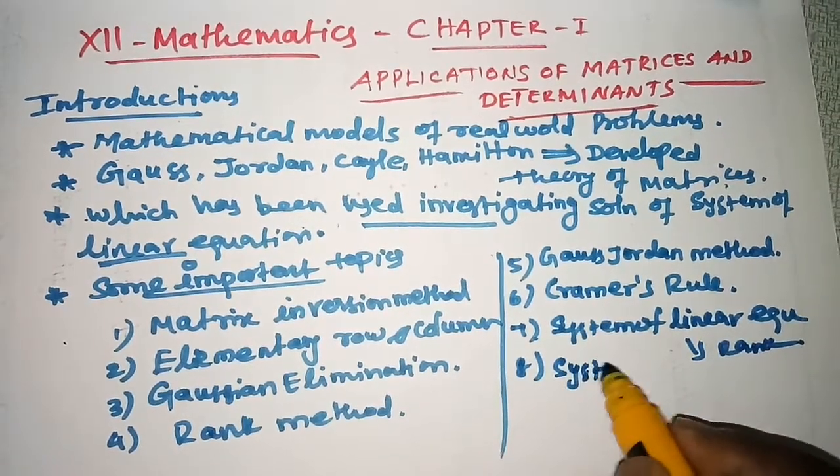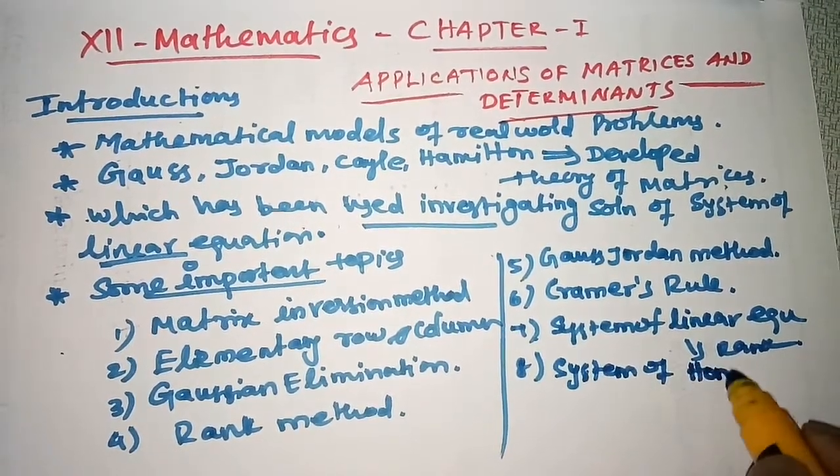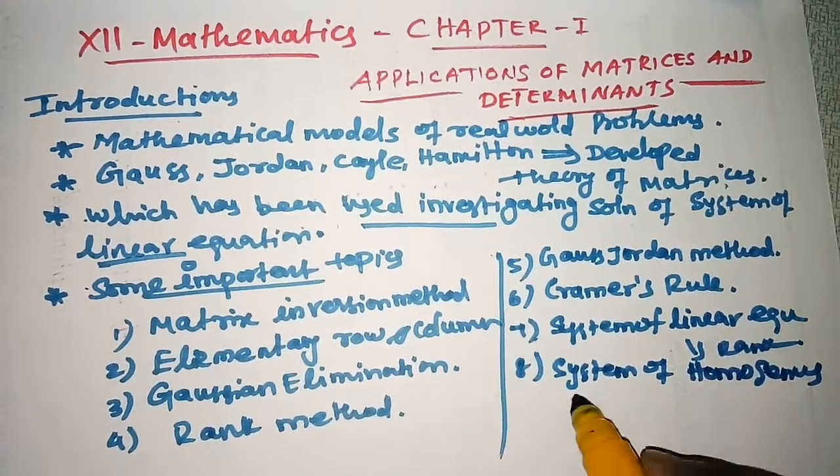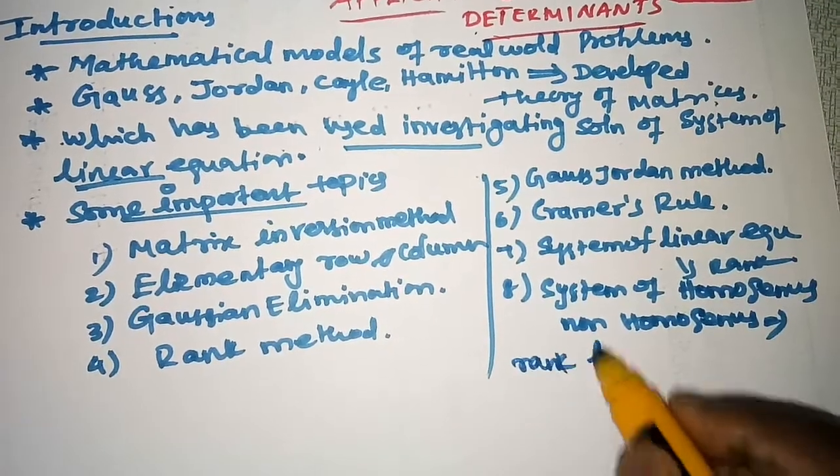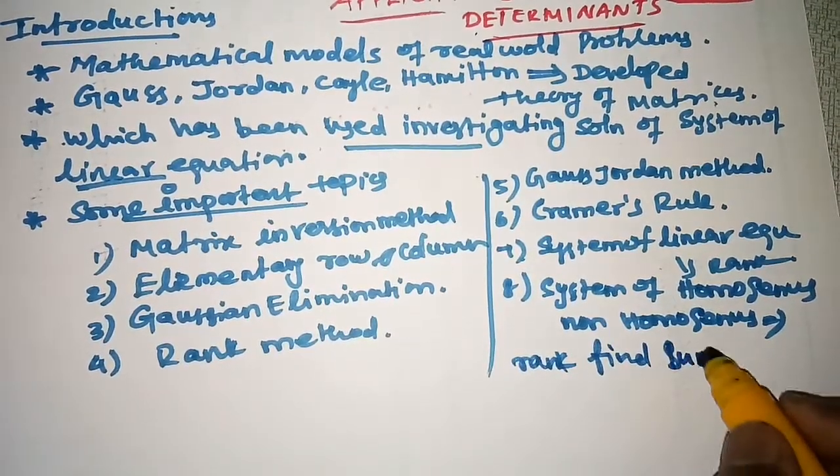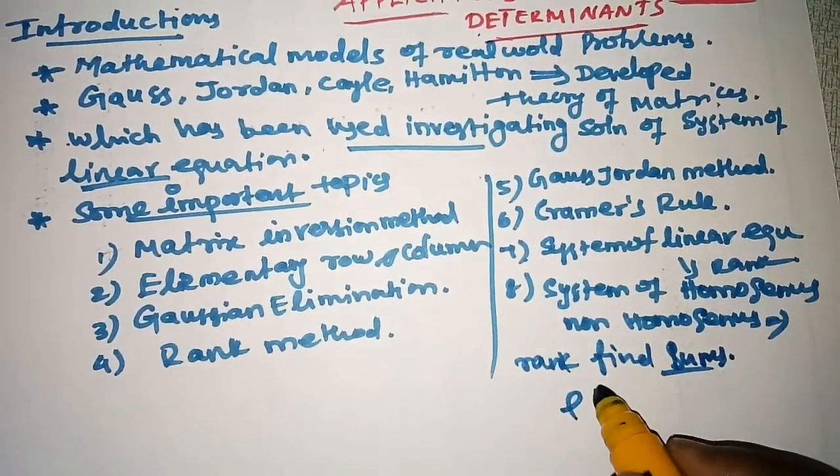This is the matrix - homogeneous and non-homogeneous equations. So you will have a system of linear equations, and there are three types based on rank.